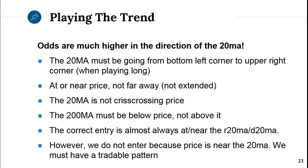You want the entry to be at or near price, not far away. You don't want the 20MA to be crisscrossing price — you want it trending just below price, or just above it and trending down if it's a short. When playing long, you also want the 200MA to be below price, not above it — that's indicative that the stock is strong across multiple timeframes.